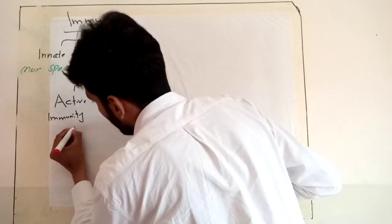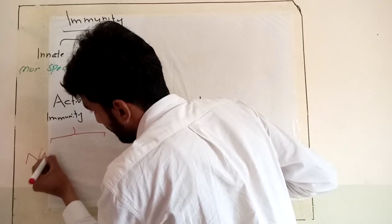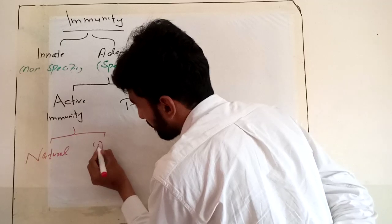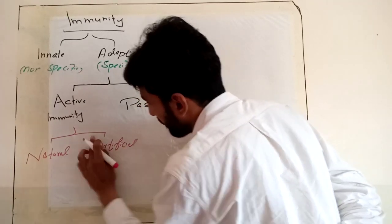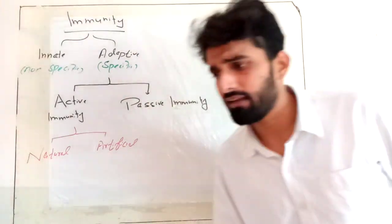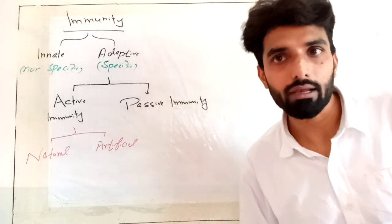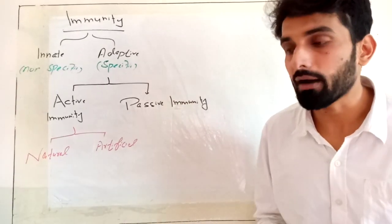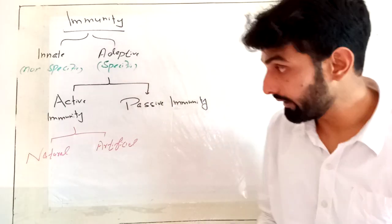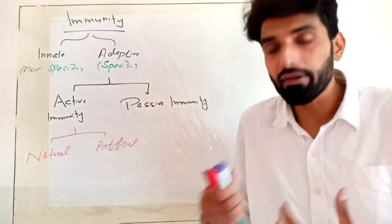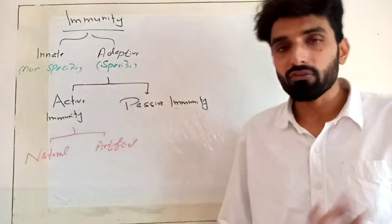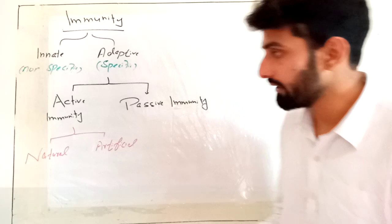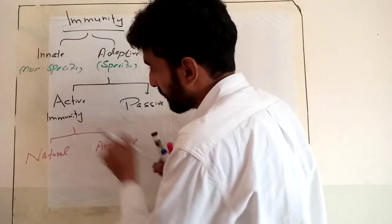Active immunity has two major types: the first one is natural active and the second one is artificial active. Natural active immunity occurs whenever you get exposed to a pathogen or get infected by bacteria or virus — your immune system will start making antibodies against that particular foreign particle. The process of infection is natural, so any infection is an example of natural active immunity.